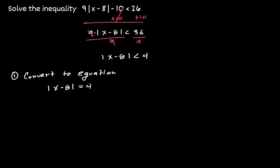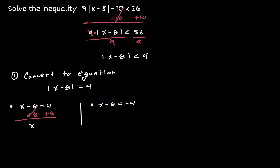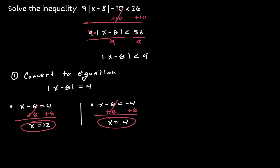Now that we have converted our inequality into an equation, let's solve it. We have two scenarios to consider: when the inside is equivalent to positive 4, and when the inside is equivalent to negative 4. For the left equation, we add 8 and get our first solution: x equals 12. For the right equation, we add 8 to both sides and get our second solution: x equals 4.